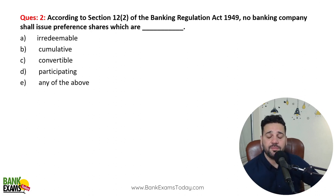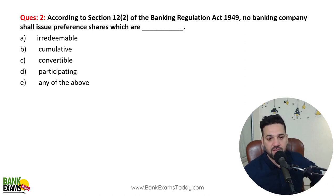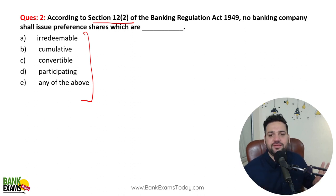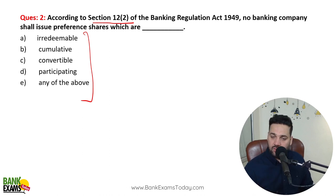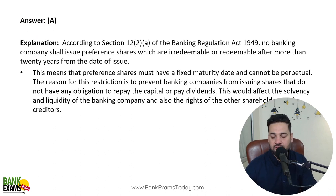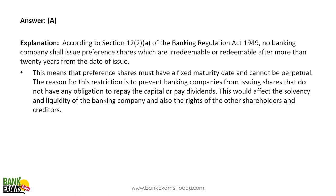According to Section 12 subsection 2 of the Banking Regulation Act 1949, no banking company shall issue which kind of preference share? The options are irredeemable, cumulative, convertible, participating, or any of the above. As per Section 12(2), a banking company cannot issue irredeemable or perpetual preference shares — shares with no maturity date. Preference shares must have a fixed maturity date. A is the correct answer.